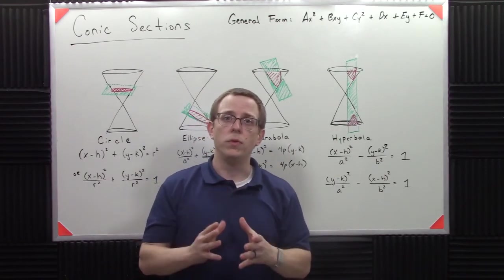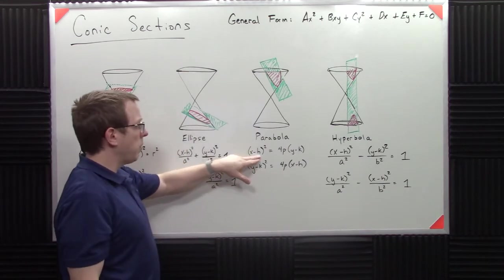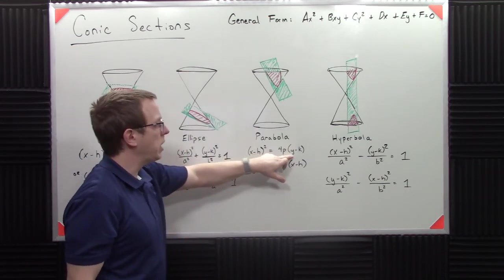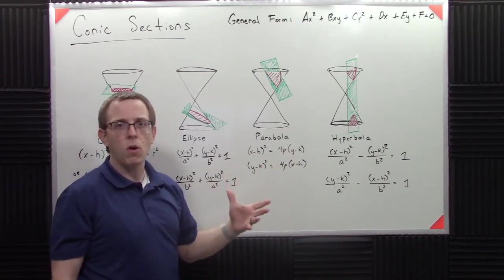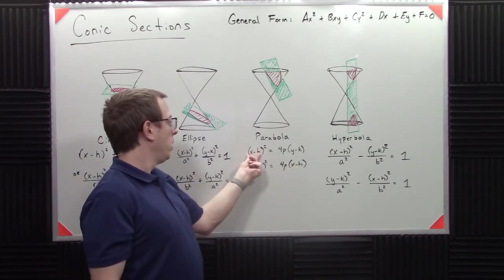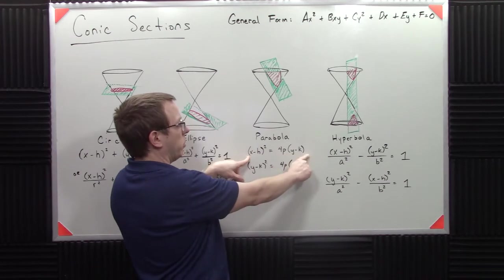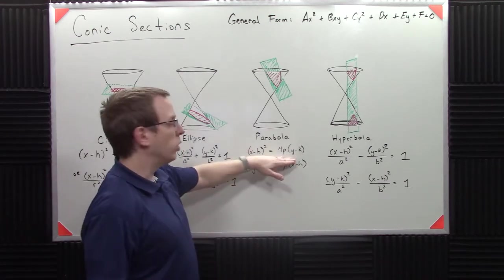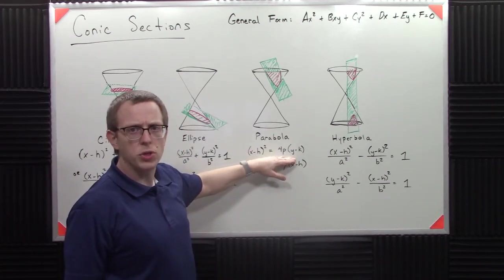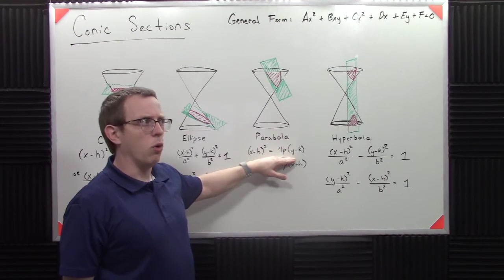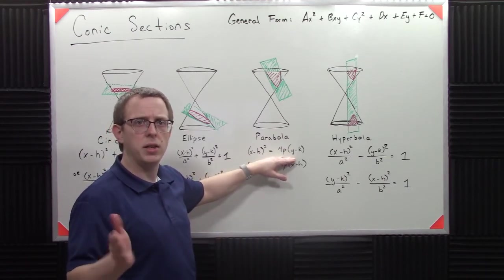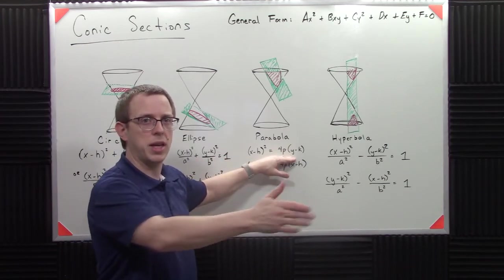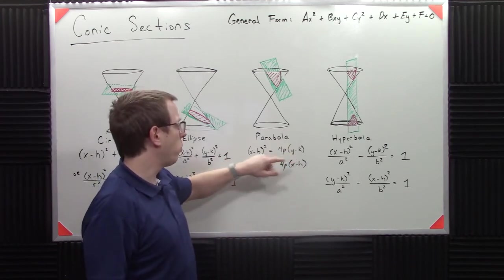Now, the formula for a parabola is x minus h squared equals 4p times y minus k. Or you might flip it. Now, what these are, these are the equations for, this is like the parabola you're used to. Now, it looks different, right? Usually, you're used to seeing something like y equals ax squared plus bx plus c, or y equals a times x minus h squared plus k, those sorts of formulas. This looks different, and it should.